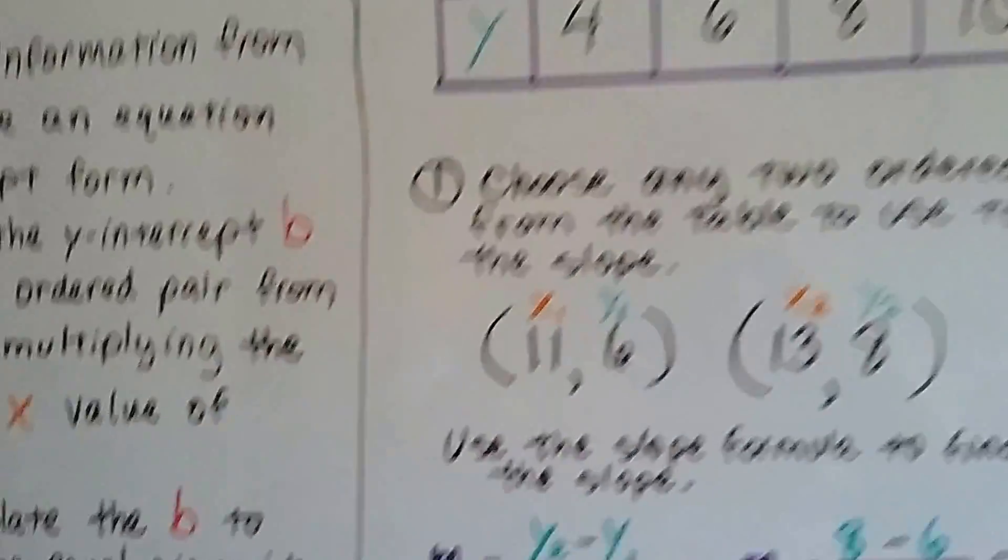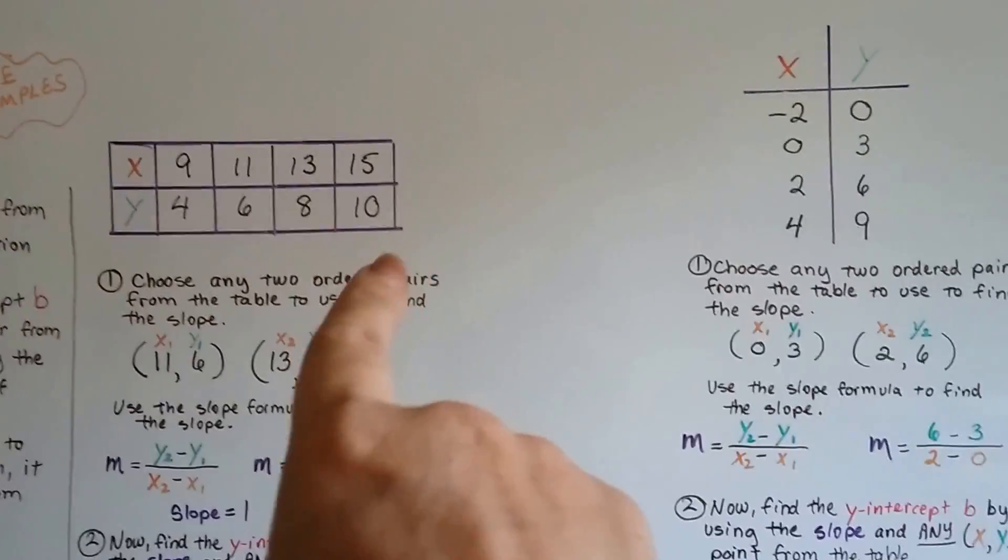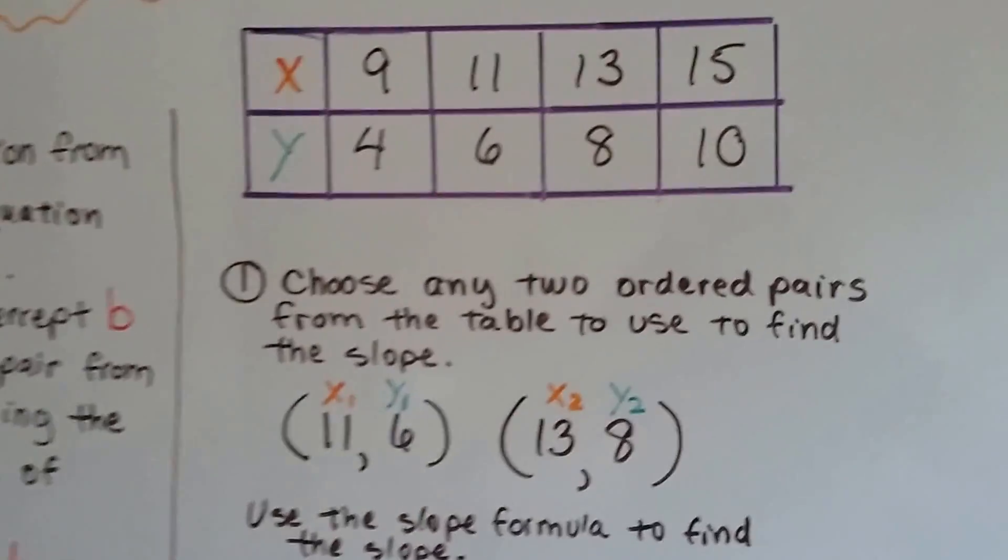So I'm going to give you two examples. In the first one, our table is laying horizontally this way, and in our other example, it's going vertical that way. So here's our first one.